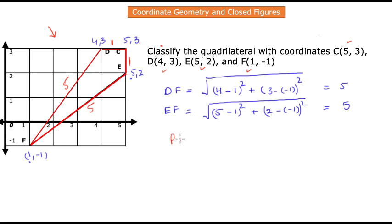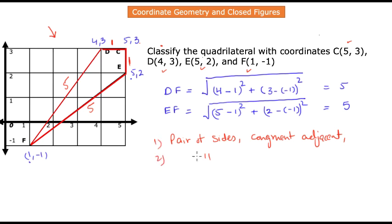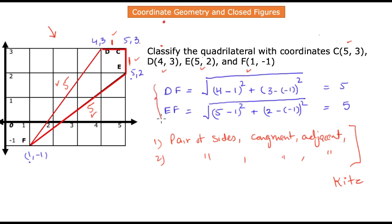Now we have some very important findings: DF is congruent to EF — a pair of congruent adjacent sides. Likewise, CD and CE are also congruent — another pair of congruent adjacent sides. This is the property of a quadrilateral in which pairs of adjacent sides are congruent to each other, and that shape is known as a kite. Visually you could tell it looks like a kite, but computing the distances confirms it definitively.